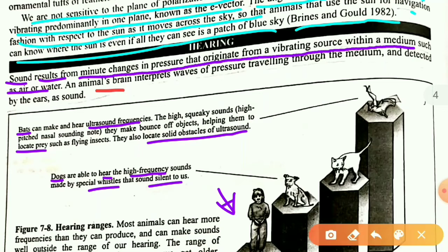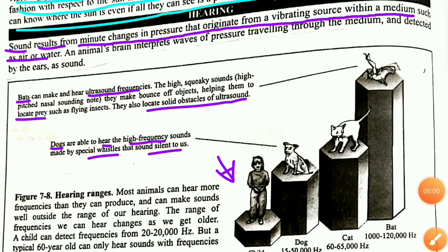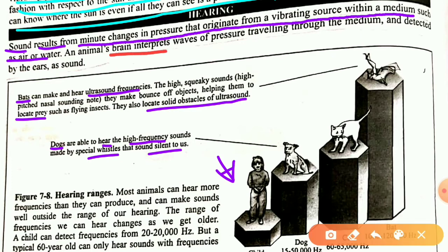When the sound travels from one point to another and reaches the ears of an organism, the auditory nerves in the ear send the signal to the brain. When it reaches the brain, the brain interprets the signal and understands what is happening. This is what happens in hearing.